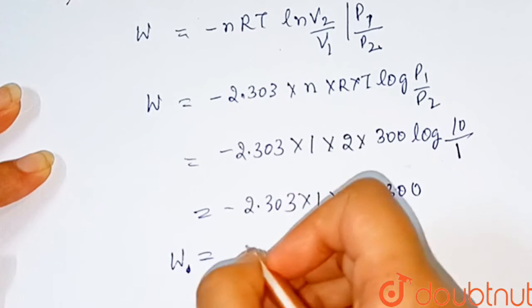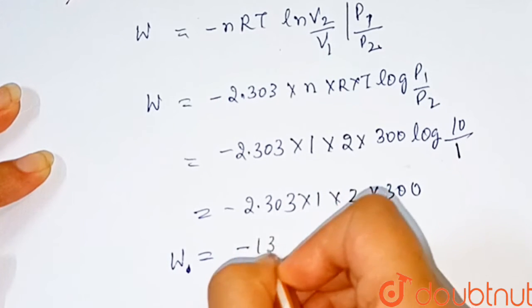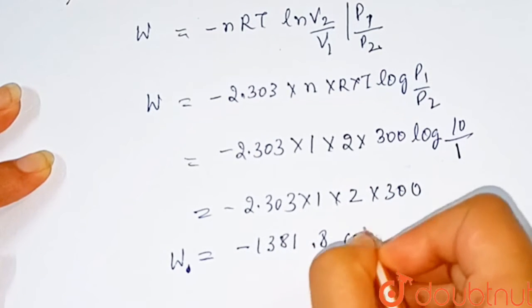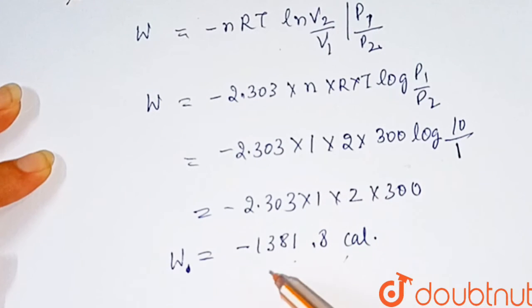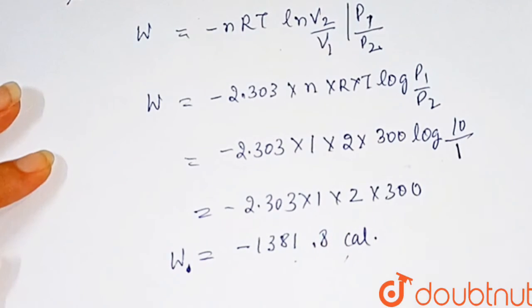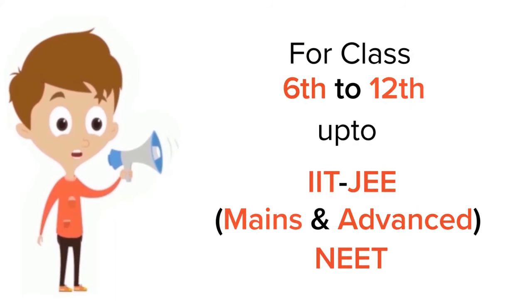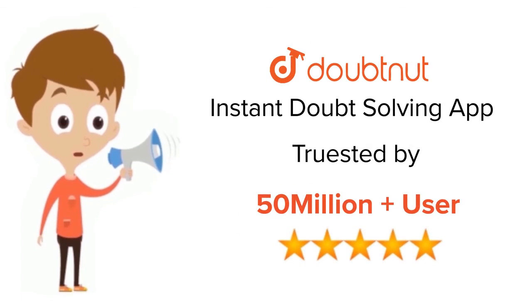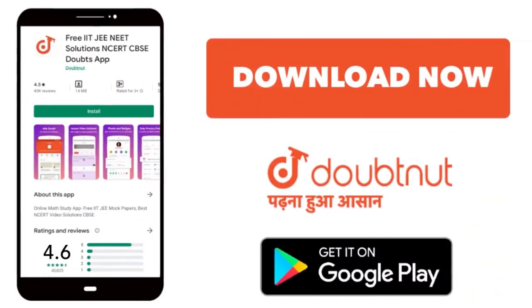Work done during isothermal expansion equals minus 1381.8 calories. For class 6 to 12, IIT-JEE, and NEET level, trusted by more than 5 crore students. Download Doubtnet app today.